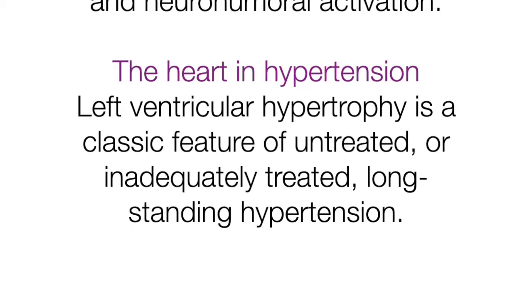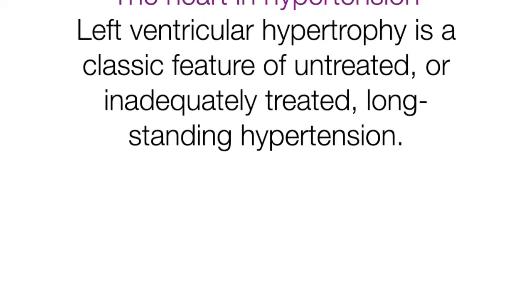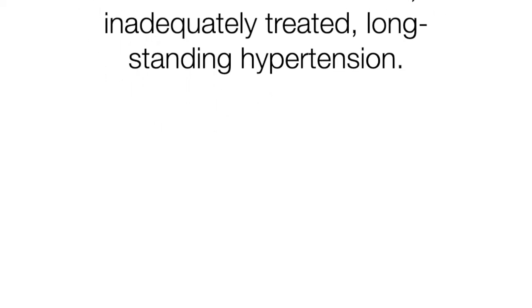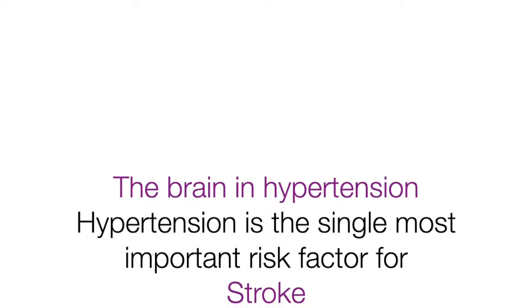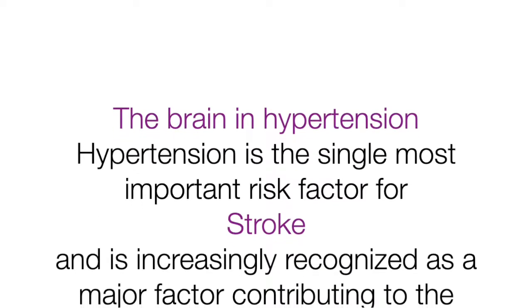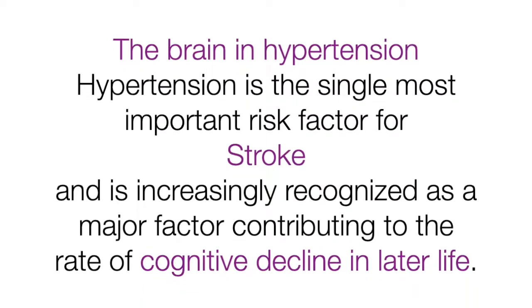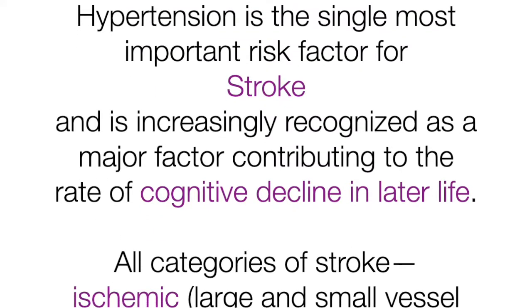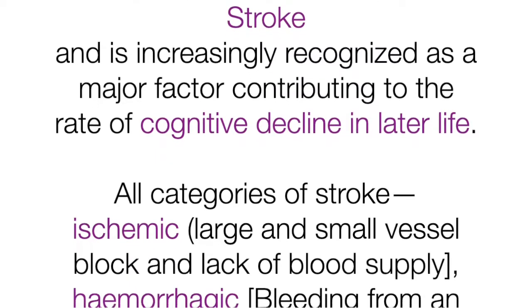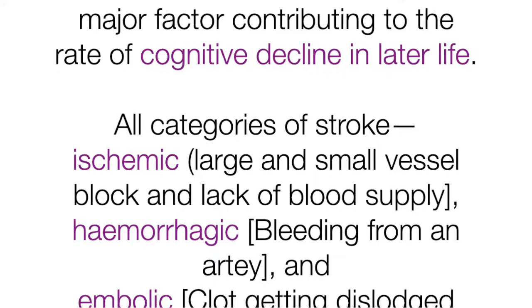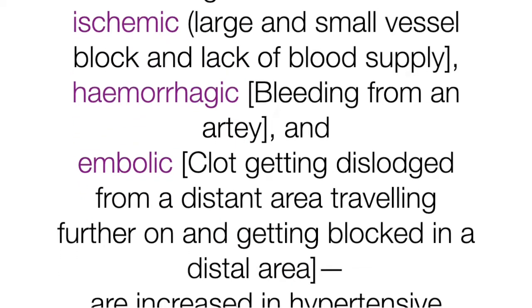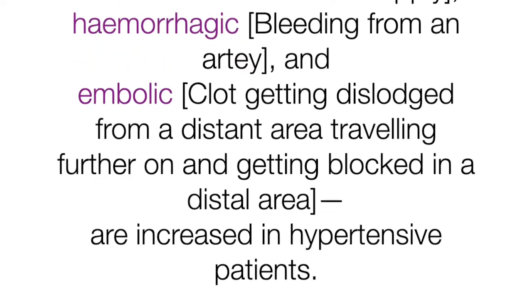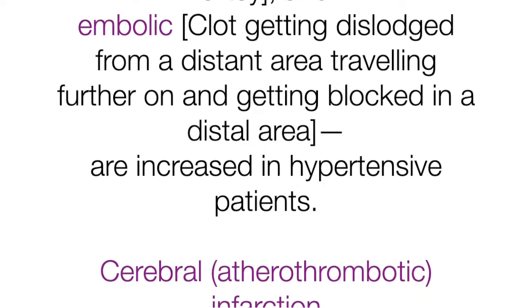The heart in hypertension: left ventricular hypertrophy is a classic feature of untreated or inadequately treated long-standing hypertension. The brain in hypertension: hypertension is the single most important risk factor for stroke and is increasingly recognized as a major factor contributing to the rate of cognitive decline in later life. All categories of stroke — ischemic (large and small vessel block), hemorrhagic (bleeding from an artery), and embolic (clot traveling and blocking a distal area) — are increased in hypertensive patients.